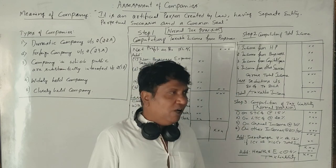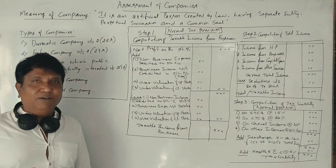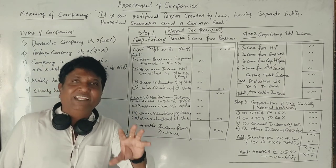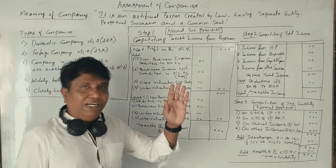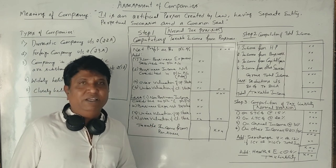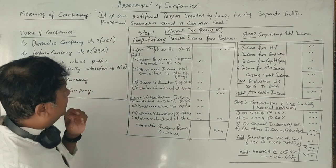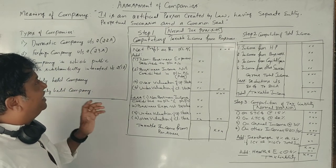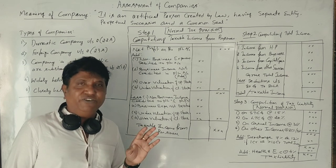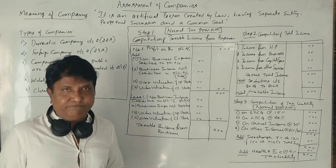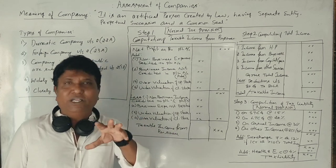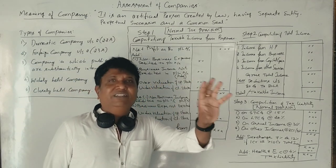Now let us look at the procedure for filing an income tax return. We have two different ways of filing the income tax return: as per the normal tax provision, and as per the Minimum Alternative Tax (MAT) provision under Section 115JB. Let us first learn how to file the income tax return under the normal tax provision. Under the normal tax provision, the first step is to calculate the income from business. We have already learned how to calculate income from business from an individual perspective in income tax.